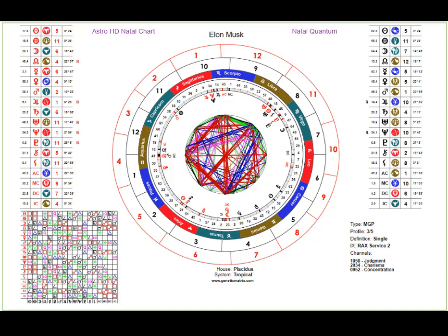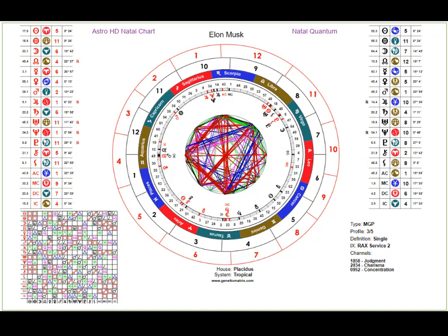This is also where we show retrograde — you'll see a red 'R' on the design side and a black 'R' on the conscious side, indicating that planet was in retrograde motion at the point of imprinting. On the lower side of the wheel you'll see 'House: Placidus' — this refers to the house system used to calculate the positions of the houses on this wheel.